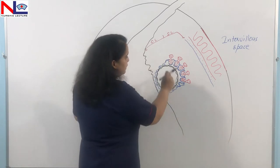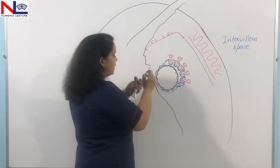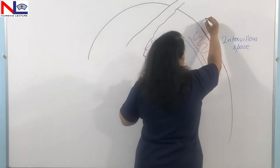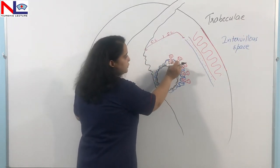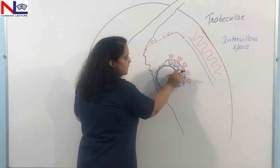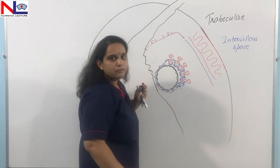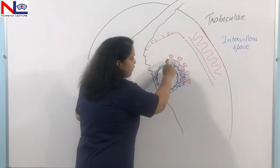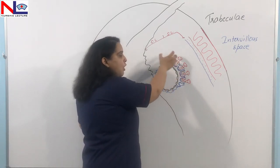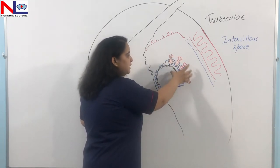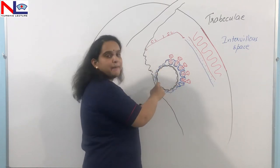The finger-like projections of syncytiotrophoblast surrounded by these lacunar spaces are called trabeculae — chord-like structures of syncytiotrophoblast surrounded by lacunar spaces, which later form the intervillous space. This villus system forms all around the blastocyst but is prominently well-developed at the embryonic pole and less developed at the abembryonic pole.